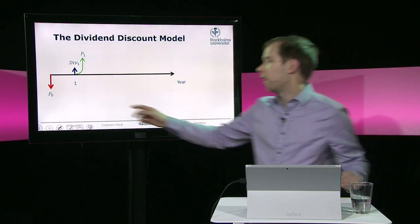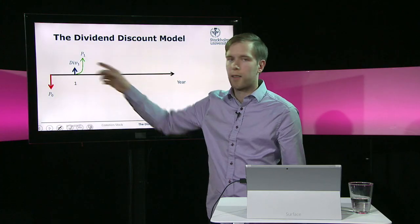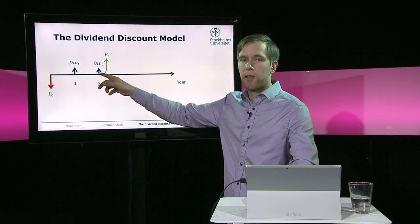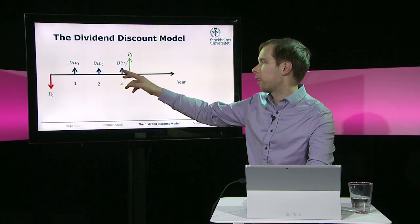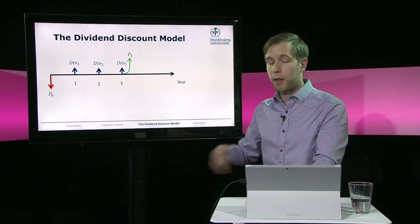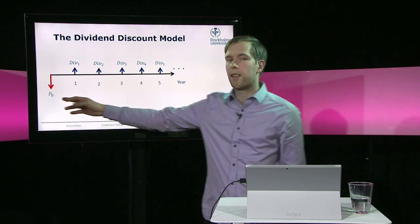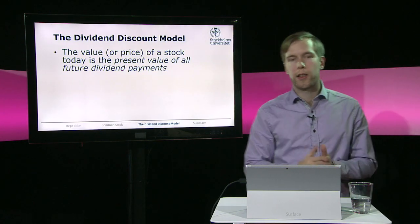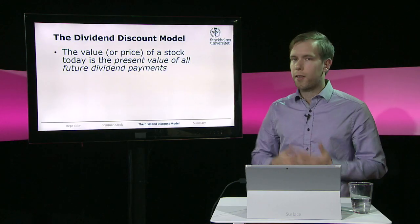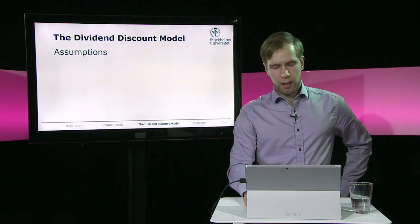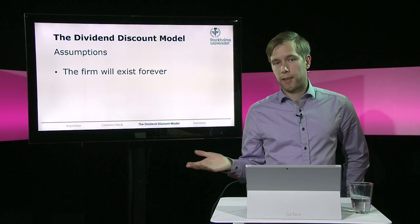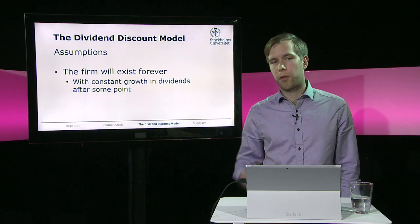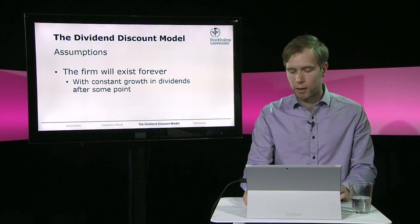As shown in the picture, the price today equals the present value of the dividend next year plus the price next year. That price is replaced by the dividend in year two and the price in year two, and so on. Going on and on, we find that the price today equals the present value of all dividends that will ever be received. That is the dividend discount model: the value of a stock is the present value of all future dividend payments. We assume the firm exists forever and that at some point dividends grow at a constant annual percentage rate, which makes calculation feasible.